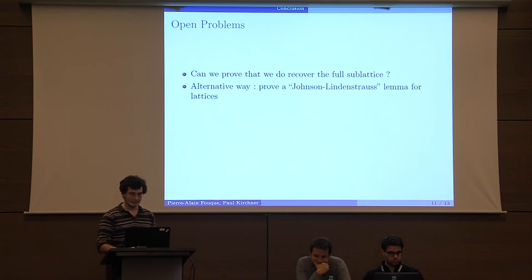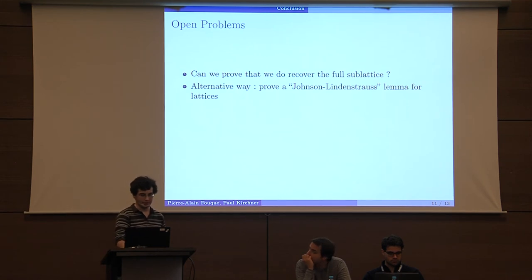An alternative way of having an equivalent theorem is to prove some kind of Johnson-Lindenstrauss lemma for lattices. This means that if you want to find the smallest AX mod Q with some very tall matrix A, then you can just consider some Q lines and hopefully this will work. If we have this kind of theorem, then we can show that our algorithm will work easily. But we don't know how to do that.